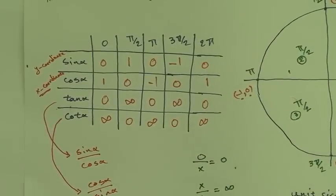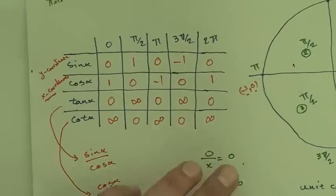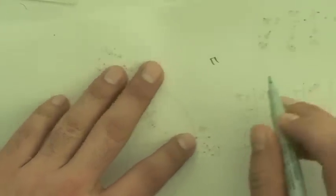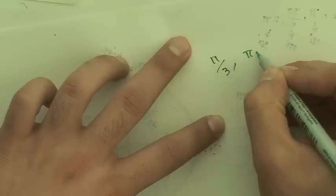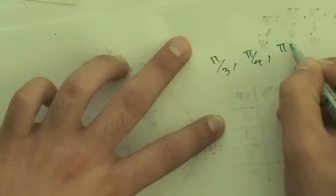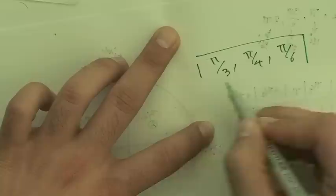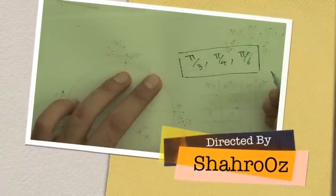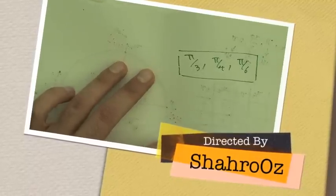That's pretty much it for part one. For part two I'm going to show you how to calculate the angles π/3, π/4, and π/6 — again without a calculator. The method I'll show you is very easy to memorize, so make sure to watch my next video. Have a good day, bye!